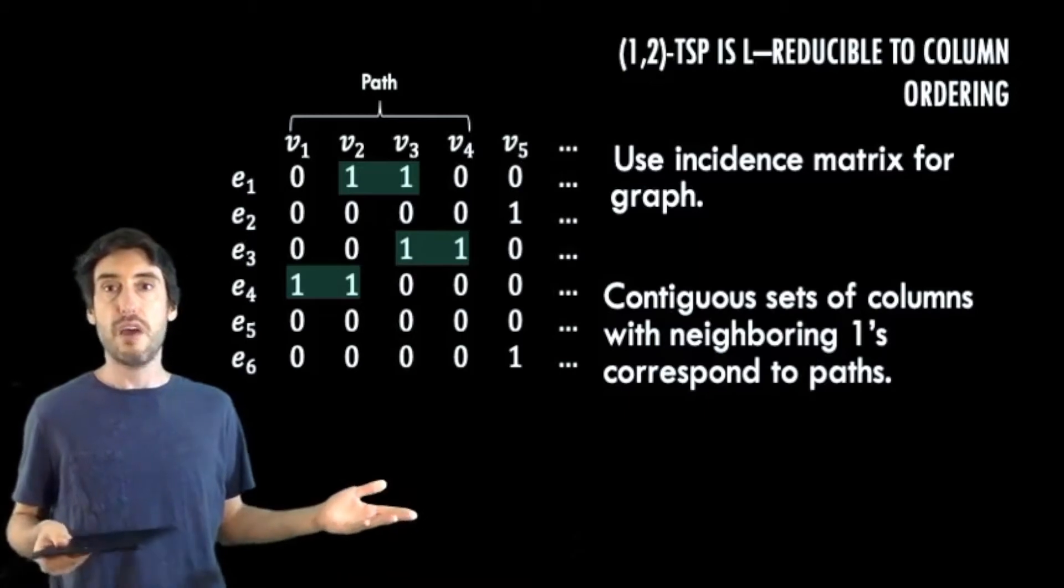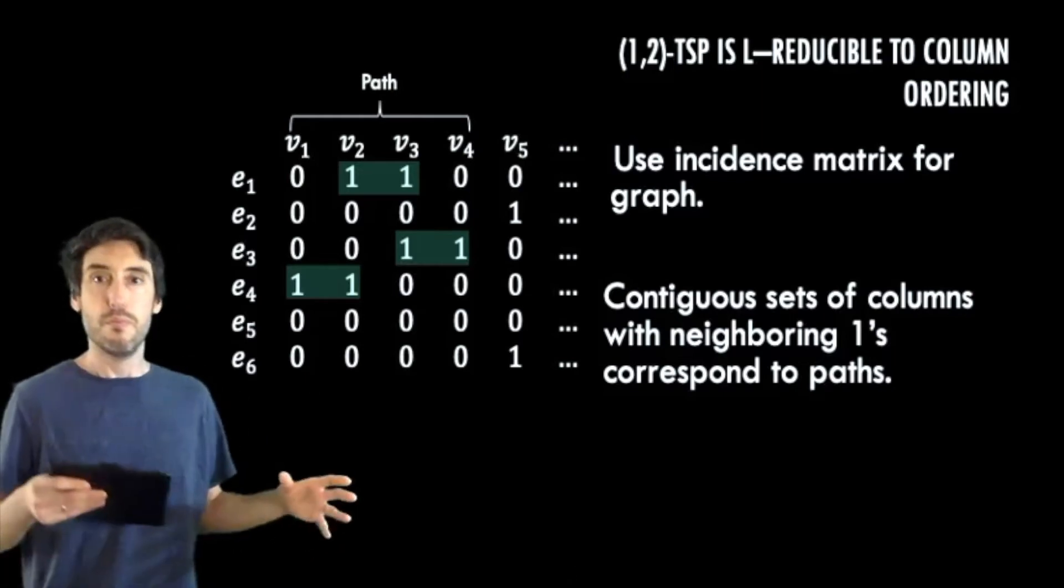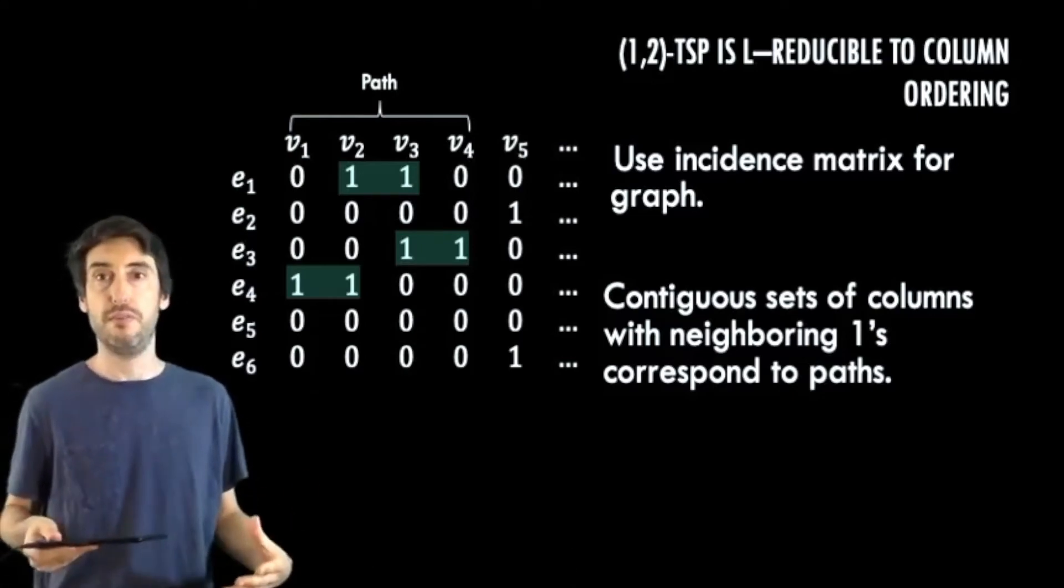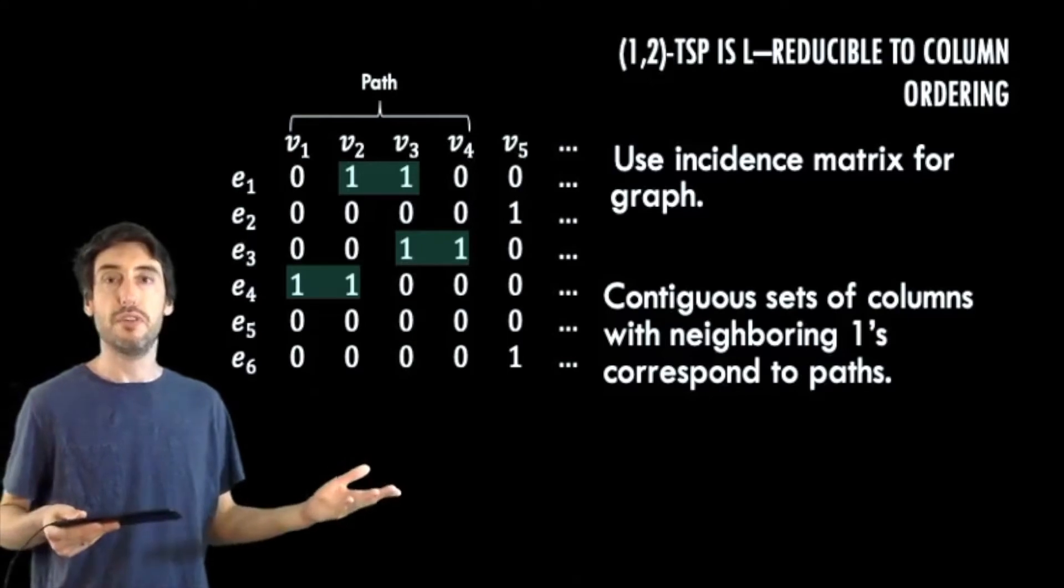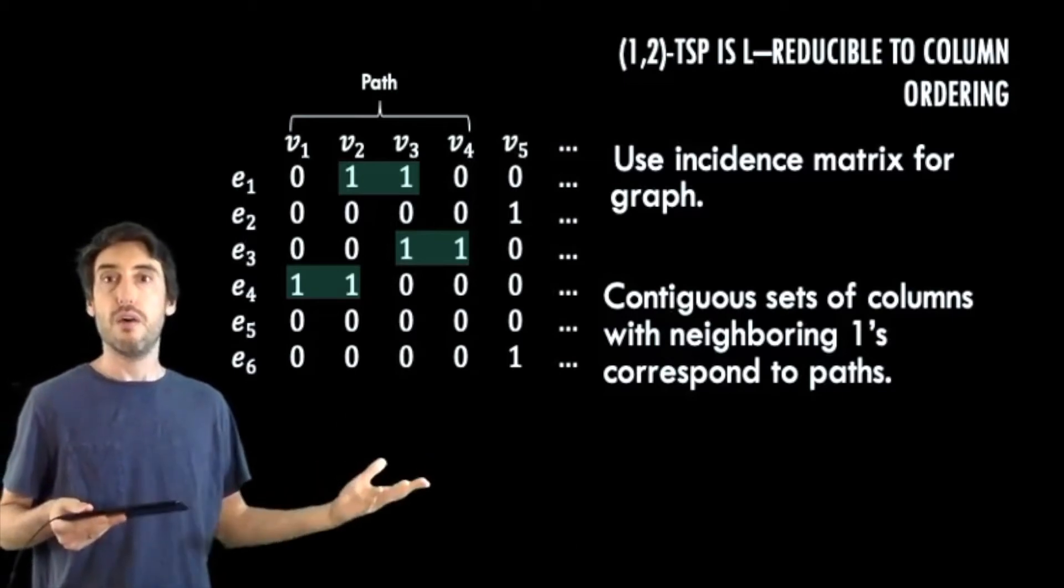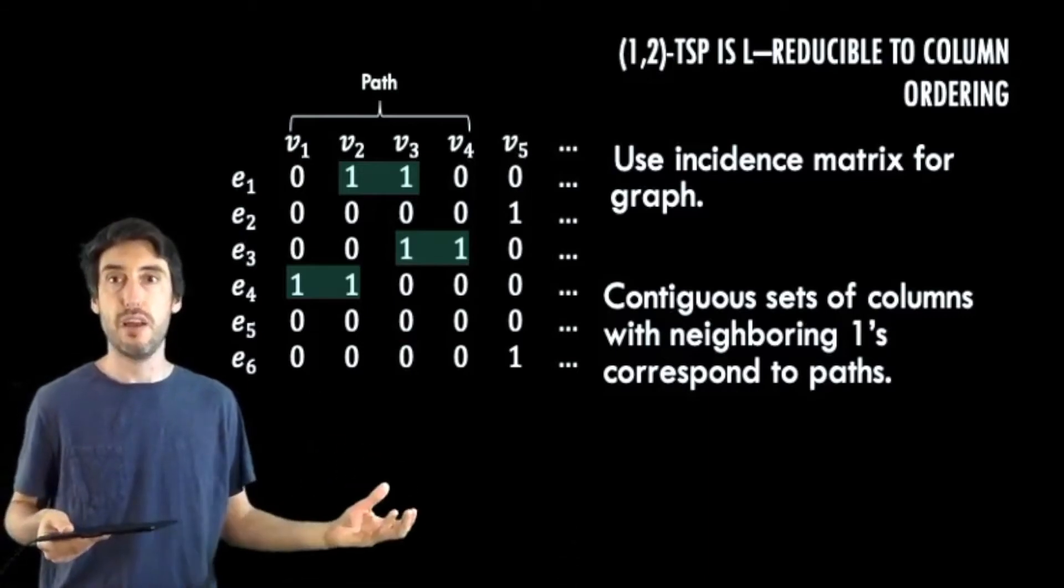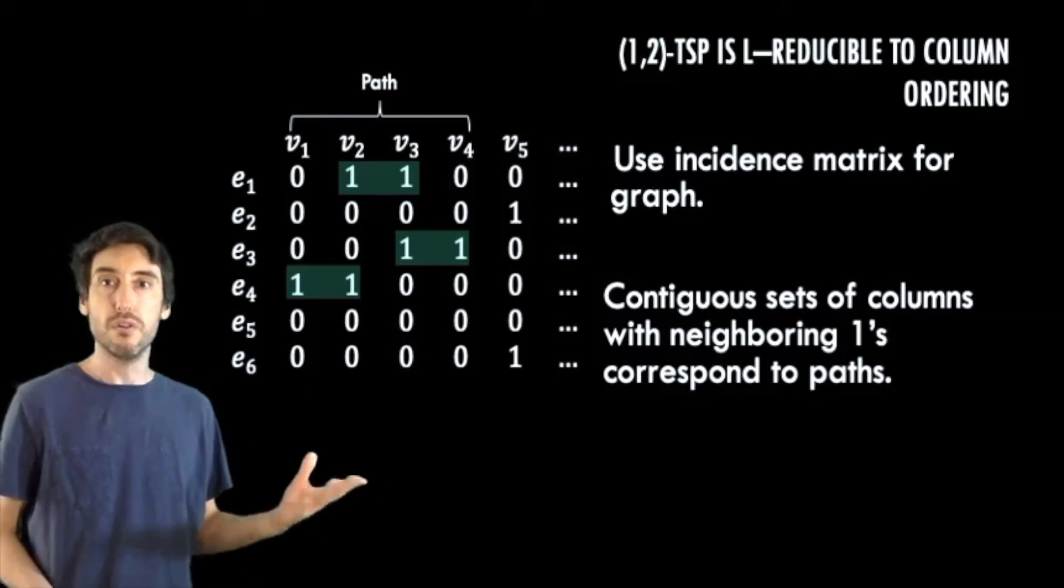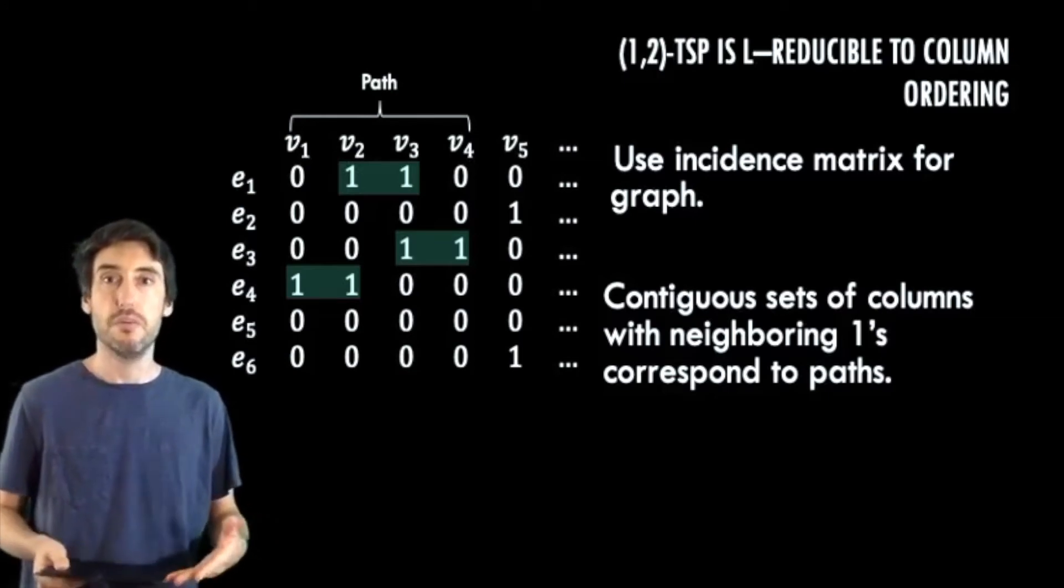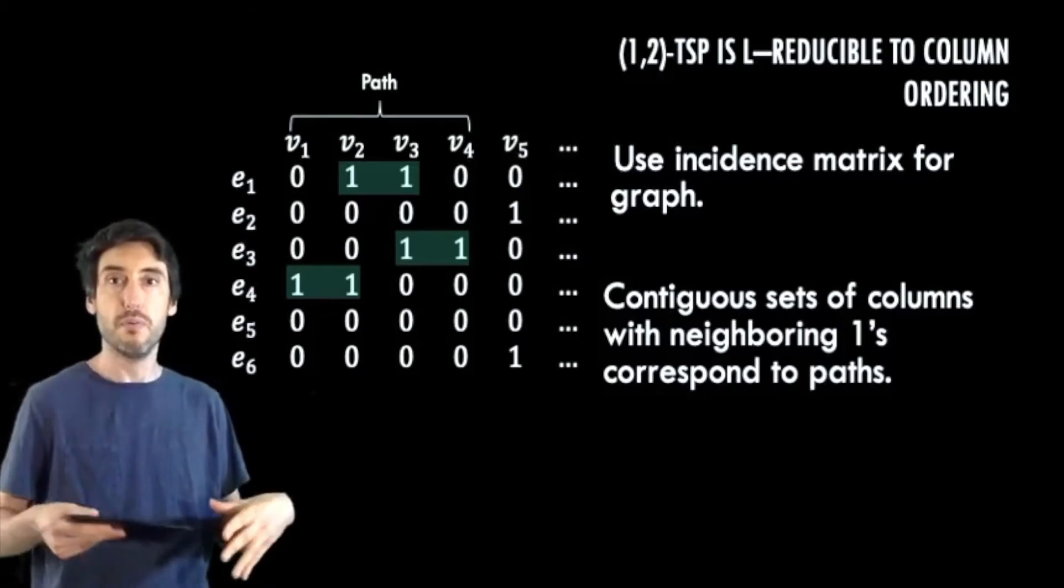So we'll give a rough idea of how this reduction works, leaving out almost all the details. So we start with the complete graph given to us in the instance 1,2-TSP, and we'll remove all edges of weight 2. Now from this graph, we're going to construct an incidence matrix M, where for each vertex we have a column, and for each edge we have a row. One is in the ijth element if edge i is incident with vertex j. So this image tries to convey why a good column ordering with few runs in the linearization corresponds to finding good vertex ordering with many adjacent vertices. As it says, contiguous sets of columns with neighboring ones correspond to paths.